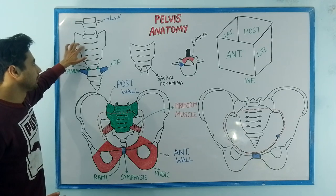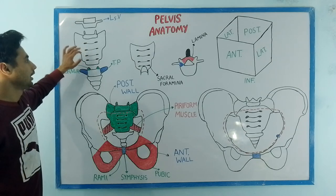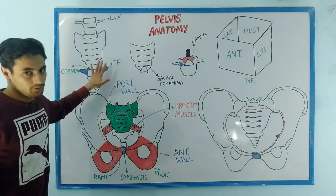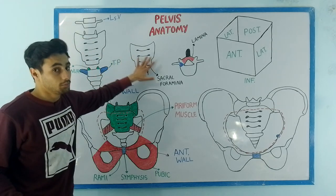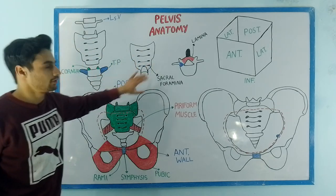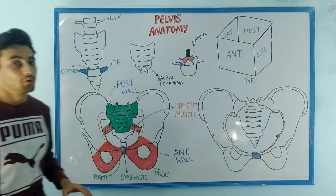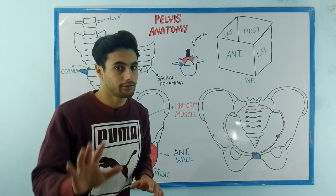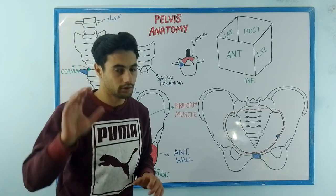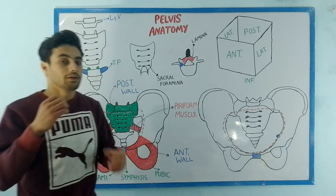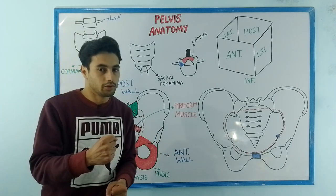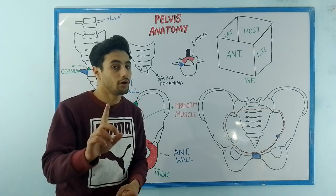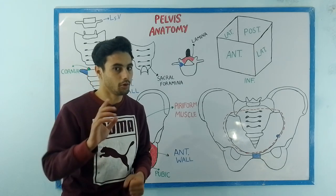These sacral foramina, which are four pairs in number, are present on the anterior side as well as on the posterior side. This whole sacrum bone is made up of five rudimentary sacral vertebrae — in other words, the five sacral vertebrae combine with each other to form one sacral bone.